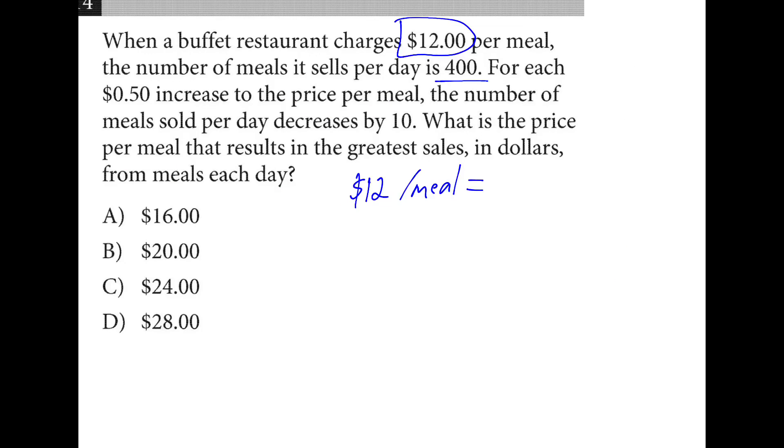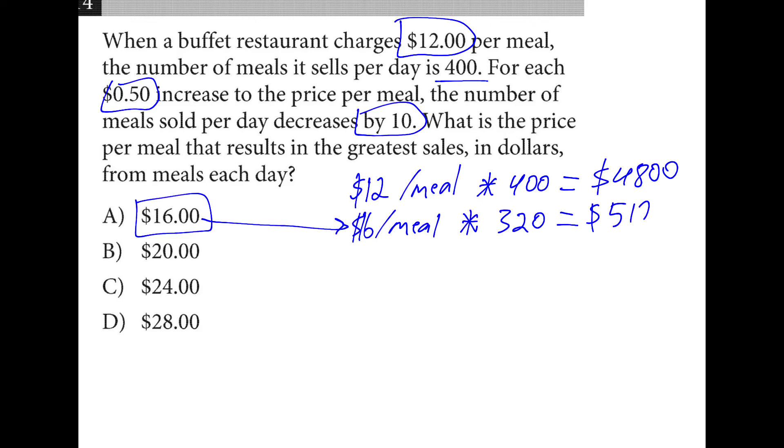If we keep this price of twelve dollars per meal, we multiply it by 400 meals and we get four thousand eight hundred dollars. Let's try with some of the other prices. If we bring in sixteen dollars per meal, our increase happened eight times, so it decreased by ten eight times. So this is now going to multiply by 320. We still come out ahead though at five thousand one hundred and twenty.